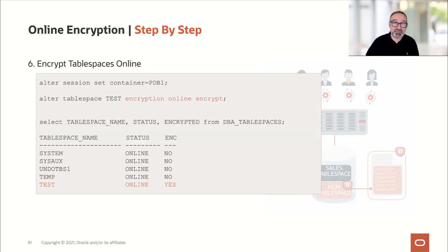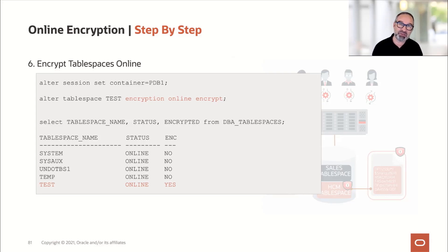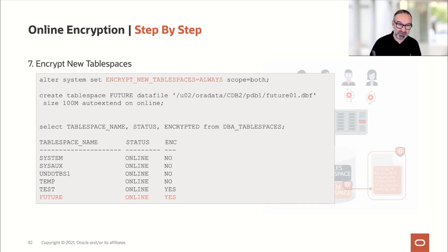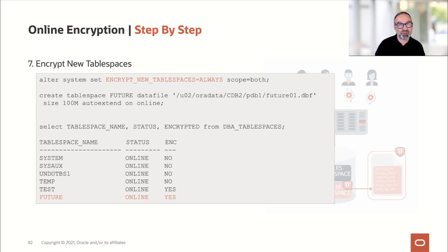Once all the prep is done, I can now encrypt my tablespace. I go into PDB1, I have my tablespace TEST, and I simply say ALTER TABLESPACE test ENCRYPTION ONLINE ENCRYPT — and it's encrypted. But what about future tablespaces? If I create a fresh tablespace at this point, it will be unencrypted. So I need to set: ALTER SYSTEM SET ENCRYPT_NEW_TABLESPACES = ALWAYS. That means all future tablespaces in this database will be encrypted by default. Online encryption has been there since 12.2.0.1 and is extremely helpful.